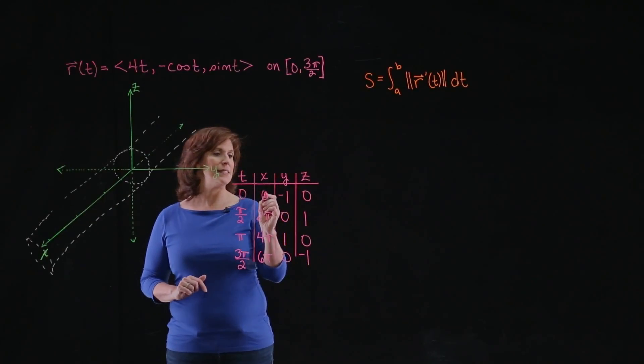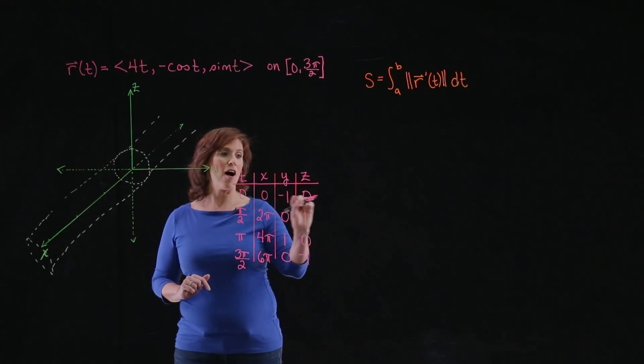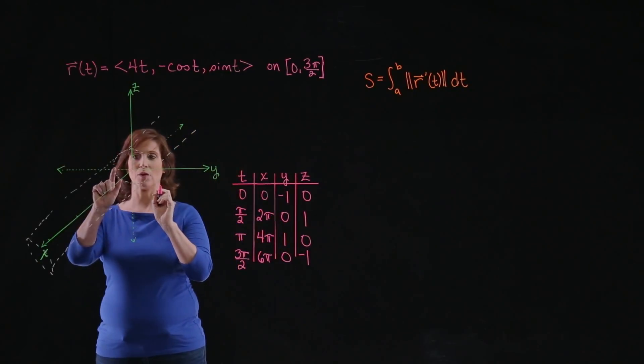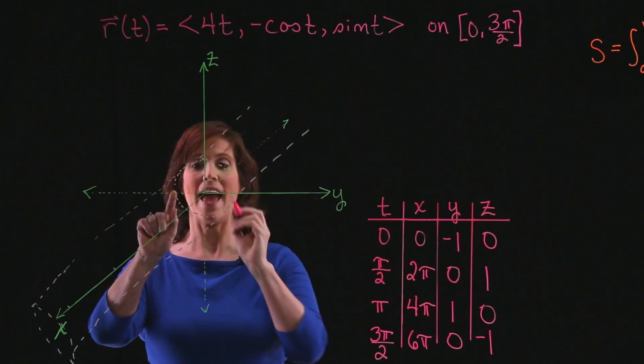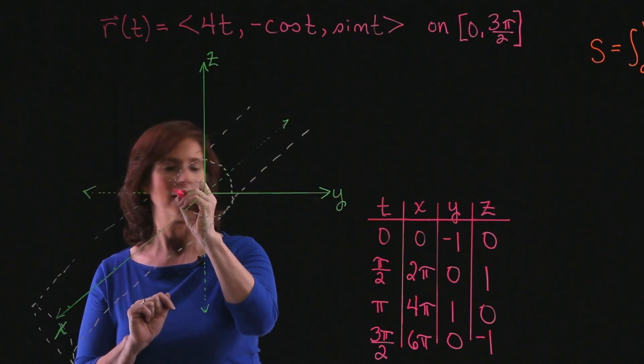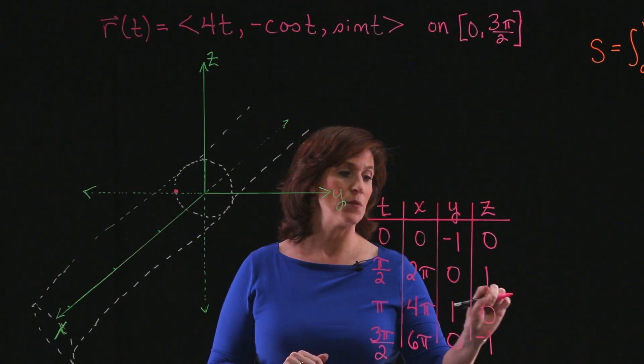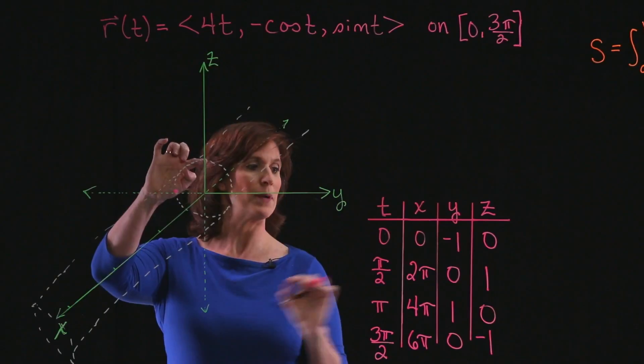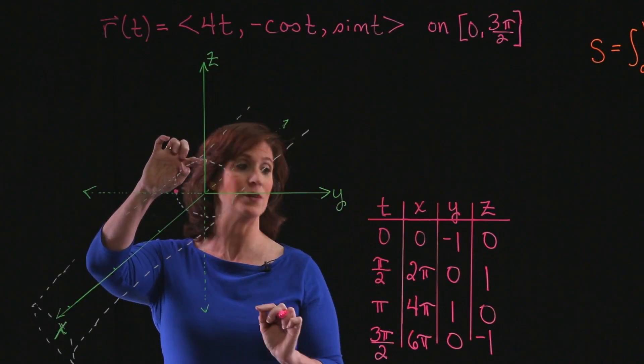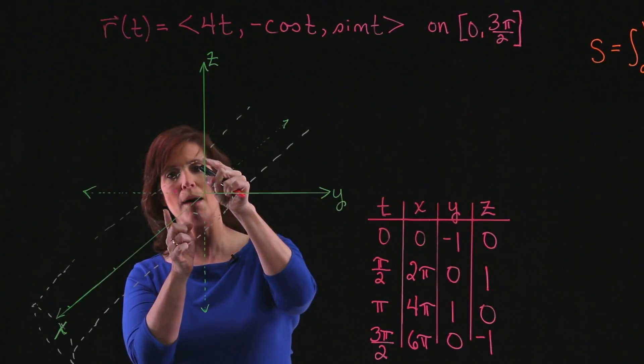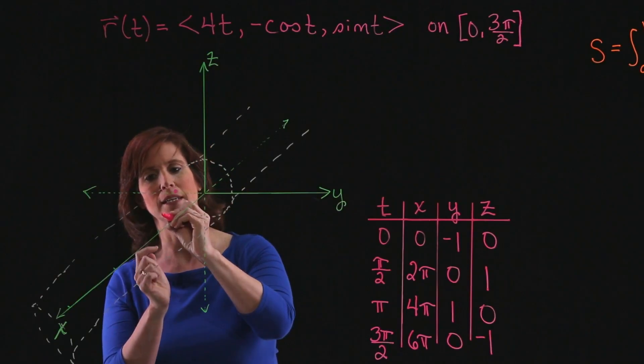The first point I have is (0, -1, 0). On the y-z-axis, that's going to be -1, 0, which is easy to see. That's going to be right at this location, and the x-coordinate is 0, so that point will be right in here. The next point is (2π, 0, 1). On the y-z-axis, that's easy to see. That's this point. But I need to go out 2π units on the x-axis, so that's about this length. So I'm going to be coming right about to here.